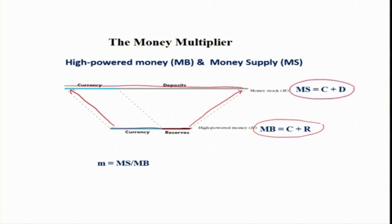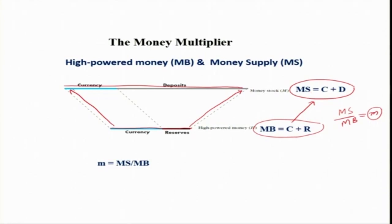Money supply, also called money stock, is equal to C plus D. The high-powered money MB increases to money supply MS by some multiple. MS divided by MB tells us to what extent, and what multiple of MB is transformed into MS.